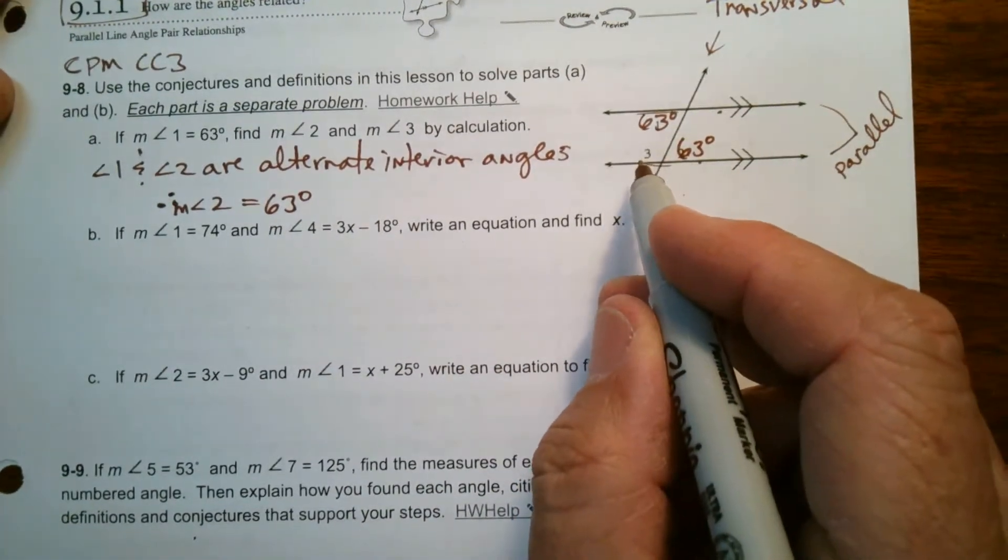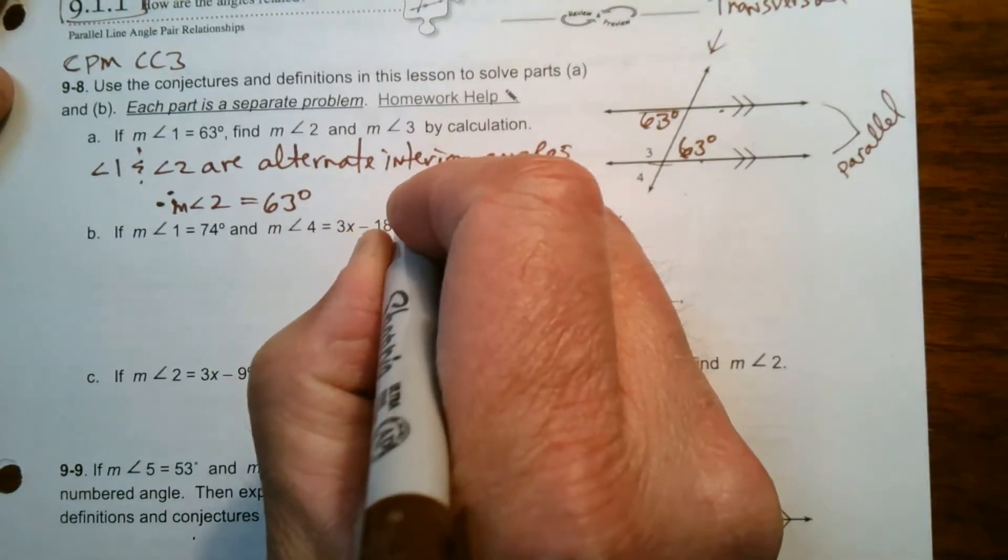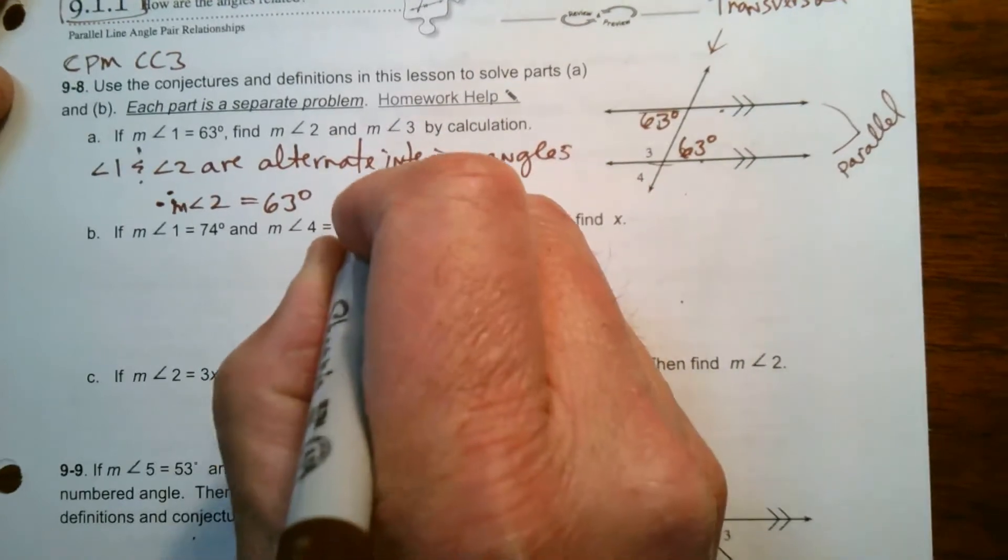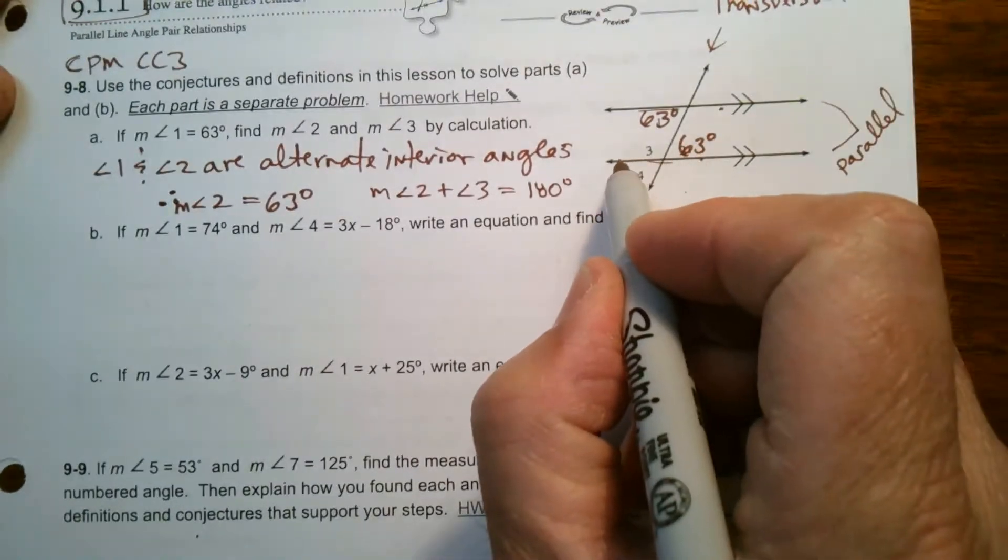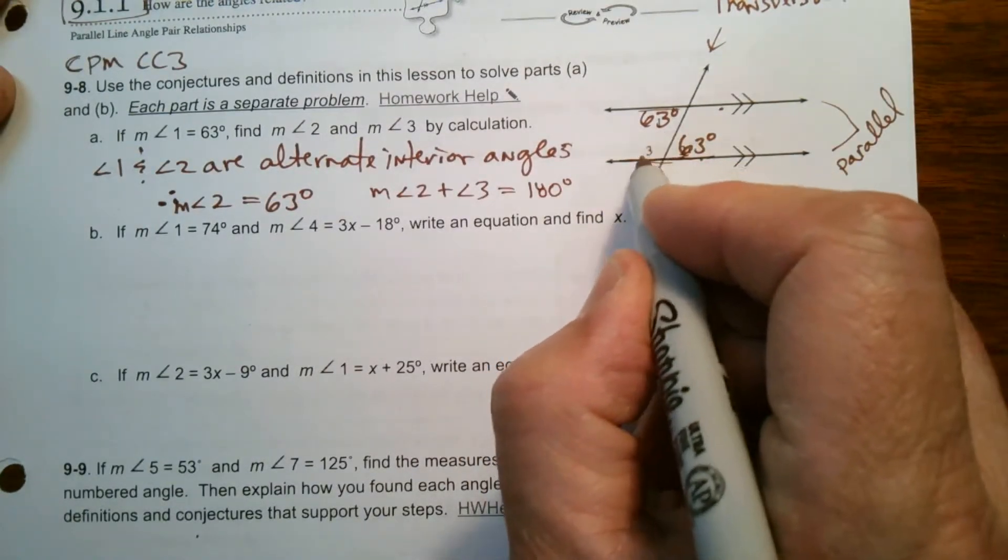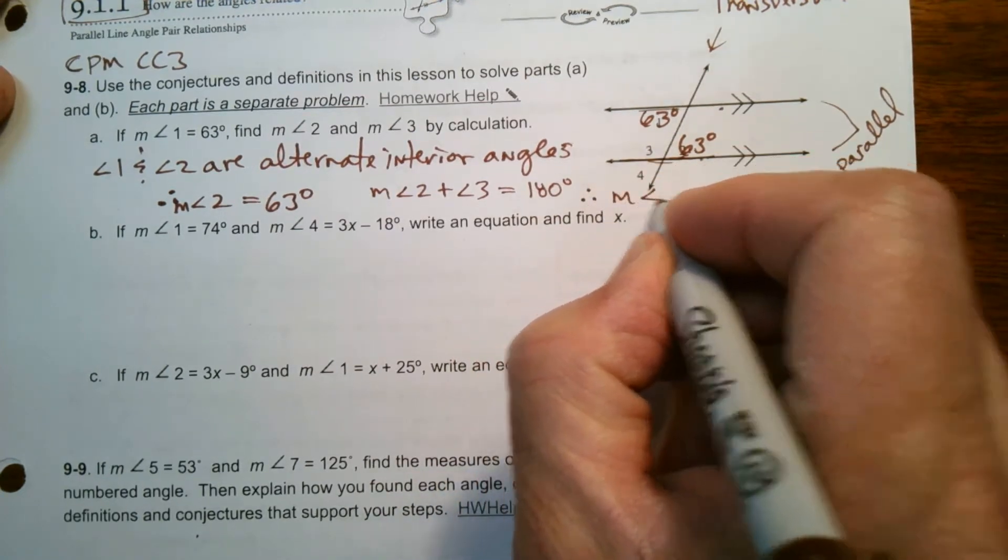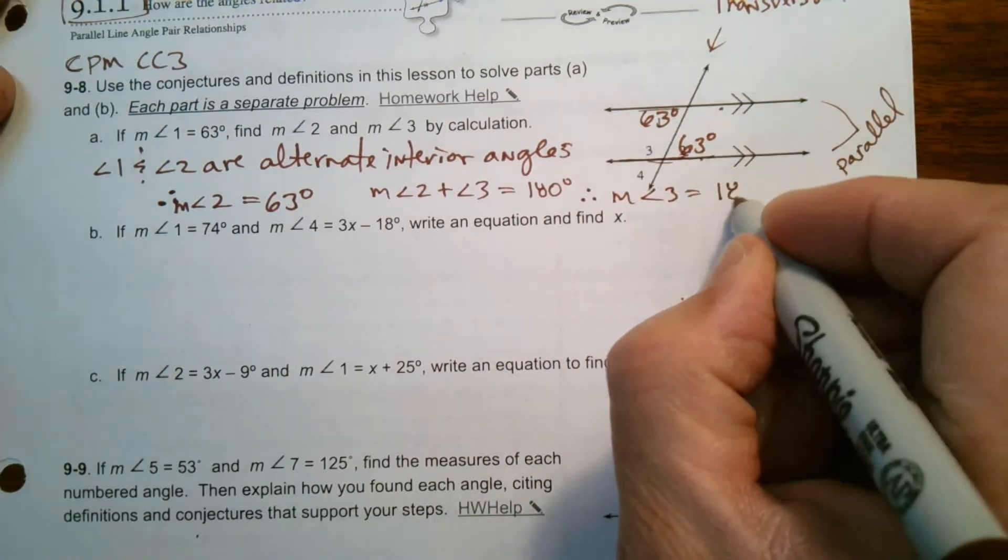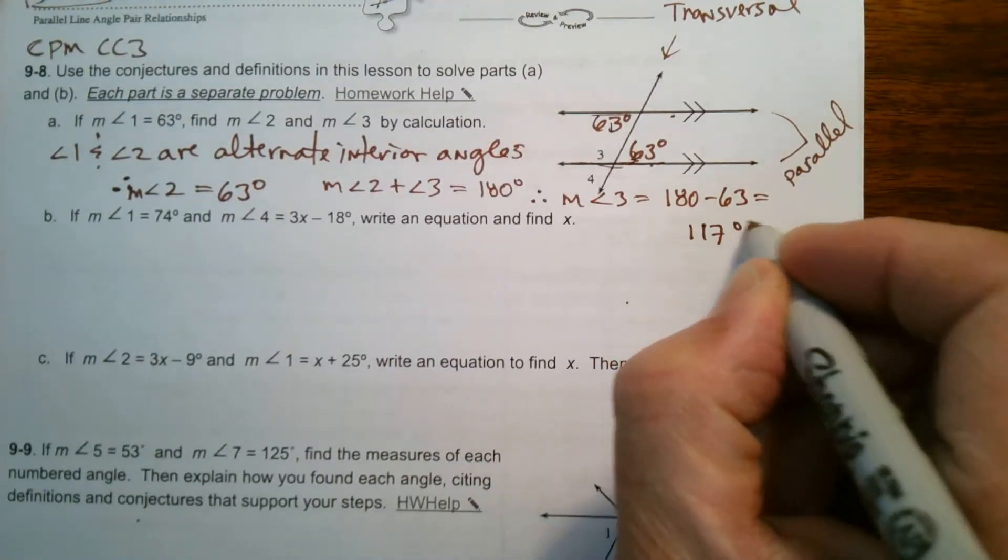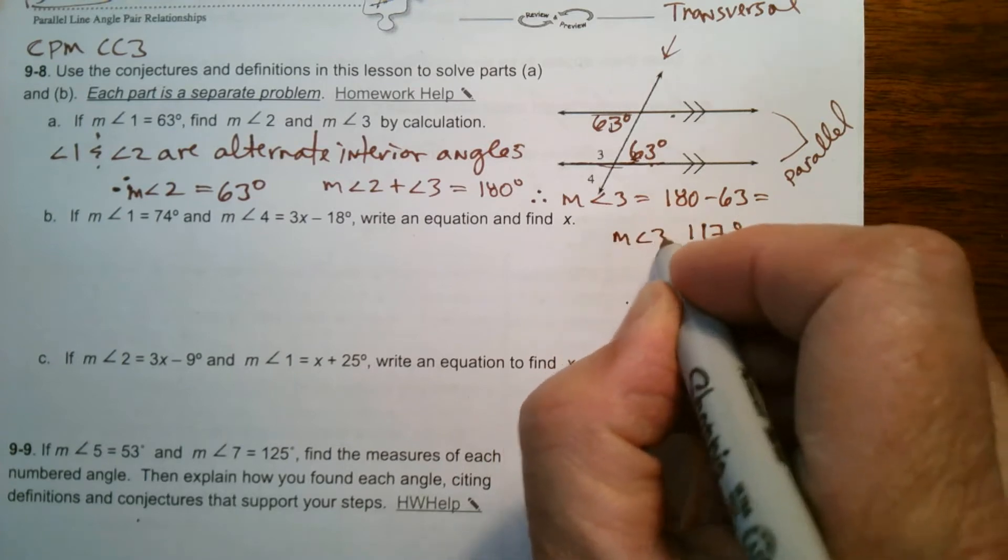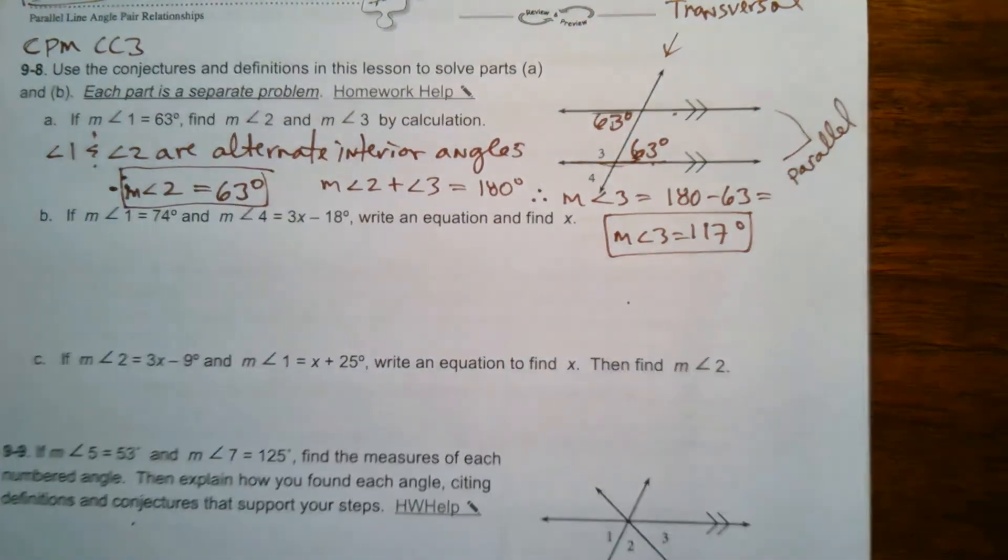And then I look at angle 3. With angle 3, I can see that angle 2 plus angle 3, the measure of angle 2 plus the measure of angle 3 equals 180, because this is a straight angle. It's a straight line. So all of that's 180. So if that's the case, then therefore we would say that the measure of angle 3 is equal to 180 minus 63, which is 117 degrees. So measure of angle 3 is equal to 117. So there's angle 3, and here's angle 2. Those are the ones that they wanted us to figure out for A.